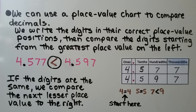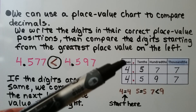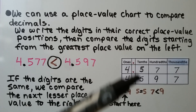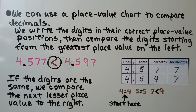We can use a place value chart to compare decimals. We write the digits in their correct place value positions, then compare the digits starting from the greatest place value on the left. If the digits are the same, we compare the next lesser place value to the right. They both have a 4 in the ones place and a 5 in the tenths place, but 7 is less than 9 in the hundredths place. So 4 and 577 thousandths is less than 4 and 597 thousandths.